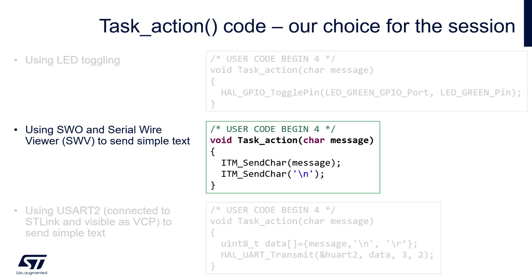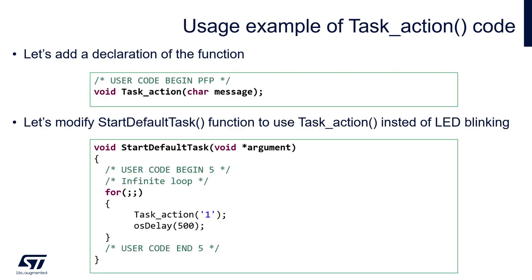Please add your code within the 'User Code Begin 4' section. The function will accept only one 8-bit argument and will return nothing. Inside we will use the ITM_SendChar function to send one character passed by the argument and additionally add a newline character. We need to add a declaration of the task_action function within the 'User Code Begin Private Function Prototypes' section. To use it within a task, just call it with a single character as the only argument.